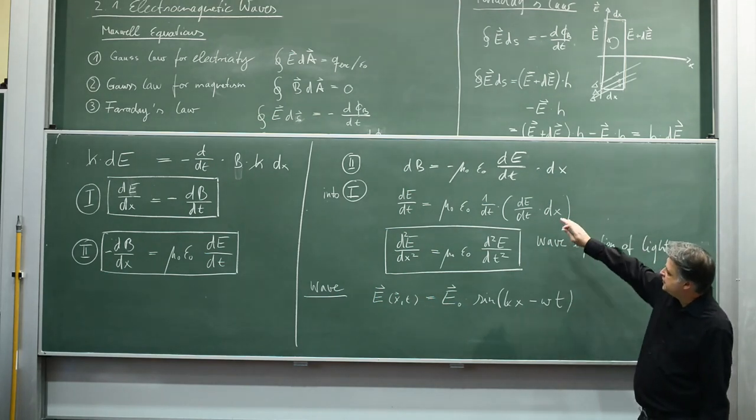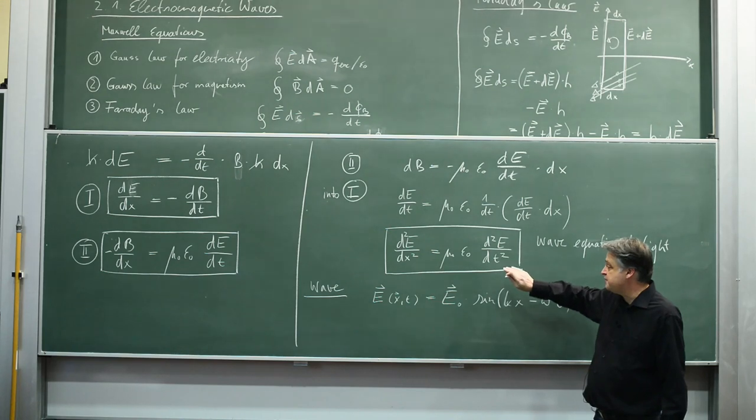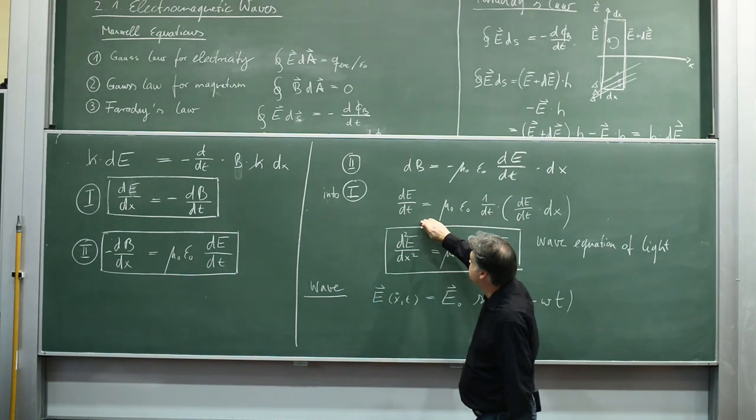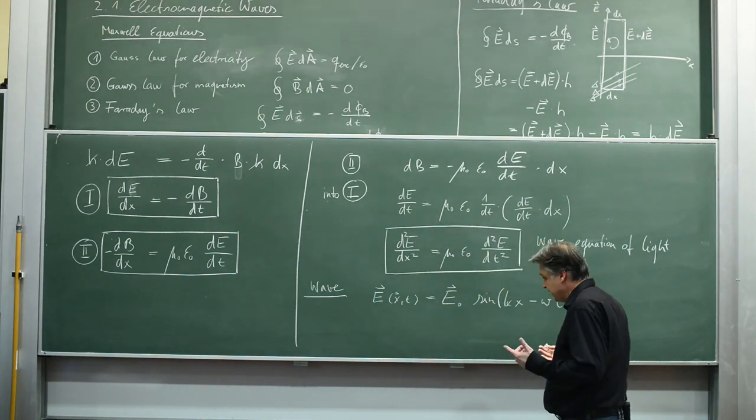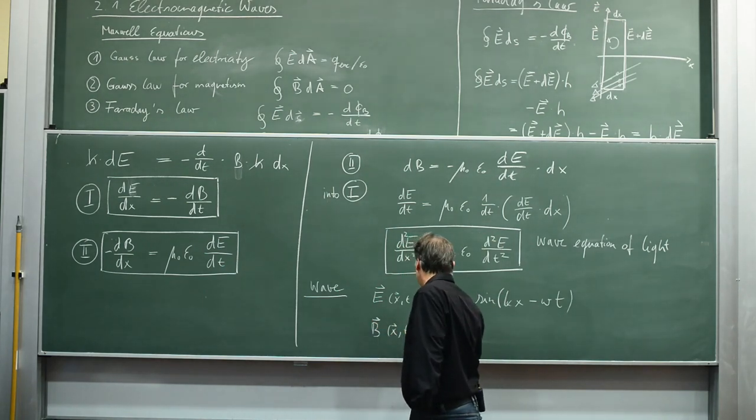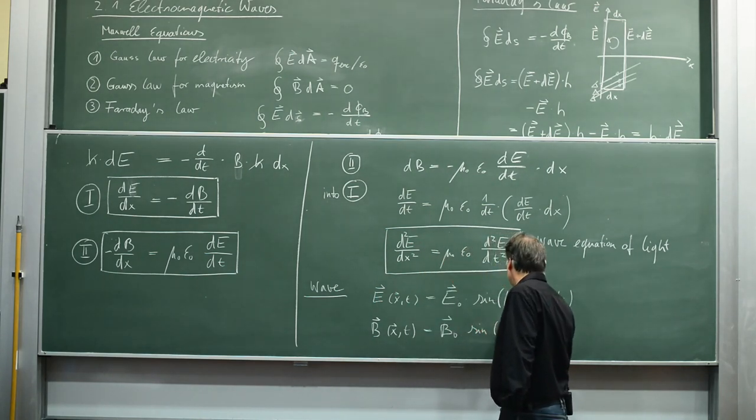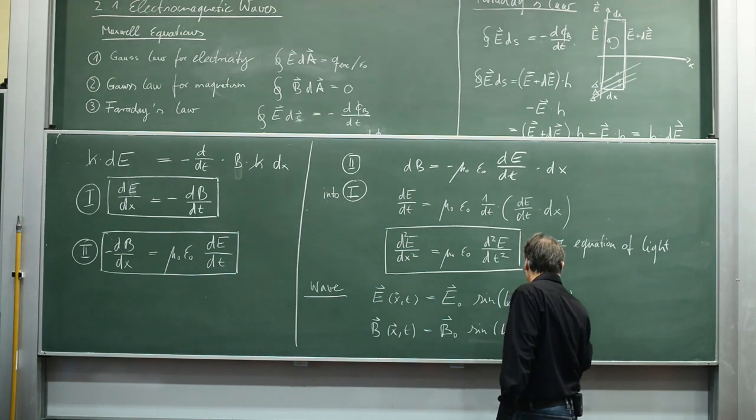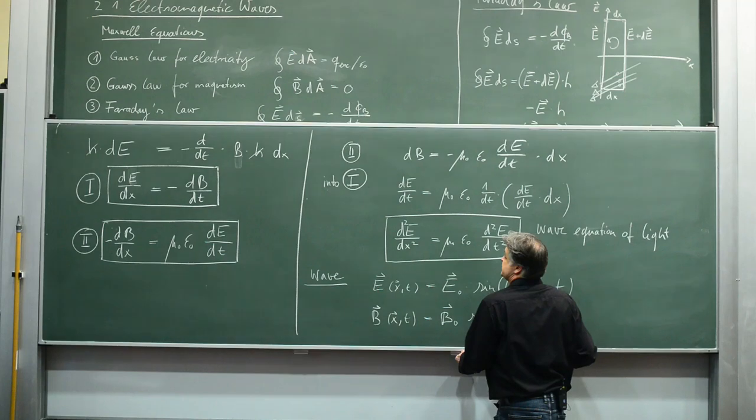The electric field as a function of space and time is E naught times sin(kx minus omega t). We can derive the same differential equation for the magnetic field part of the wave. The magnetic field wave can be described in a similar way: B naught sin(kx minus omega t). This is our assumption.